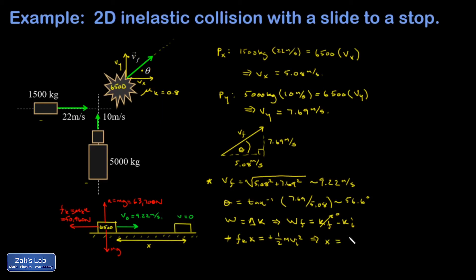That's going to be m v initial squared over two times fk. Plug in our numbers: 6500 for the mass, 9.22 squared, that's speed squared, over two times fifty thousand nine hundred and sixty. And I get my distance to slide to a stop, and it comes out to 5.42 meters.